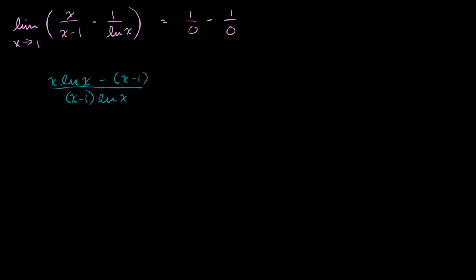Now let's take the limit as x approaches 1 of this combined expression. The numerator gives 1 times natural log of 1, which is 0, minus 1 minus 1, which is another 0 — so we get 0. The denominator gives 1 minus 1 times natural log of 1, which is 0 times 0, equal to 0. We now have the 0 over 0 indeterminate form needed for L'Hôpital's rule.